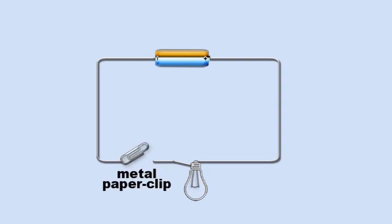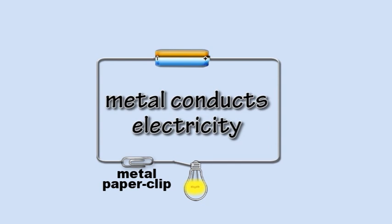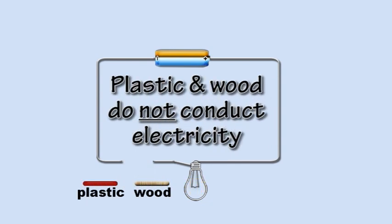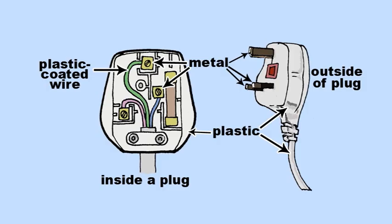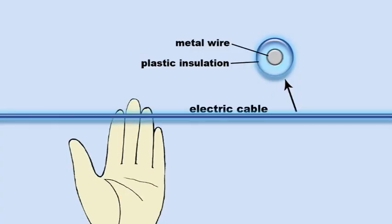You can make a switch out of a metal paper clip because metal conducts electricity. However, plastic and wood are electrical insulators so electricity won't travel through them. That is why metal wires and plugs that conduct electricity are coated or covered with plastic on the outside so that when you touch them you won't get an electric shock.